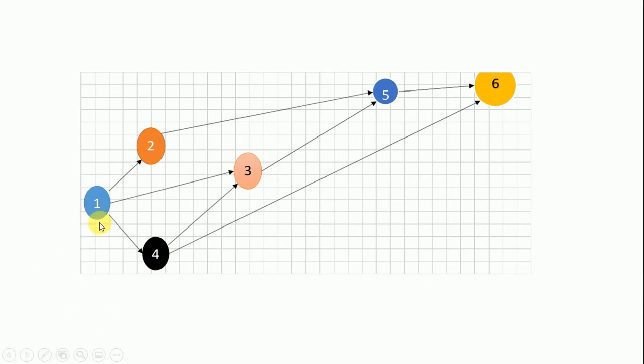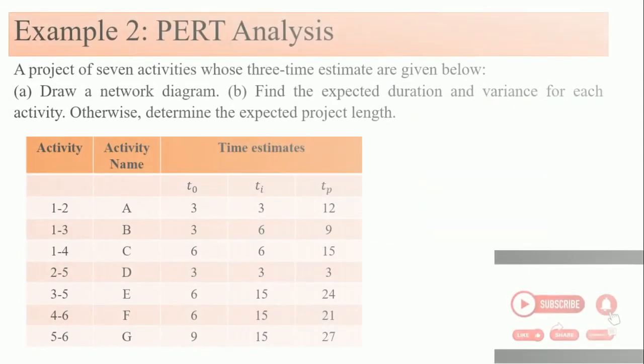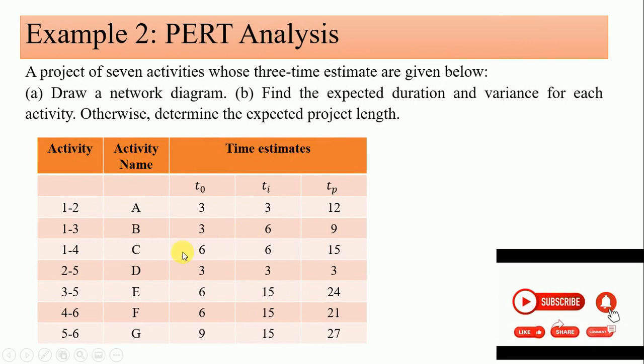Unlike the previous network diagram that we drew where we connect the activities together as a node, in this case we consider the given nodes in the table and we connect them together. This is node one, node two. From node one to node two the activity there is A. From node one to node three is activity B, from node one to node four is activity C, node two to node five is activity D, up to the last one.